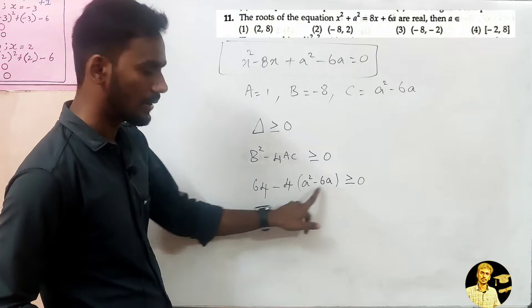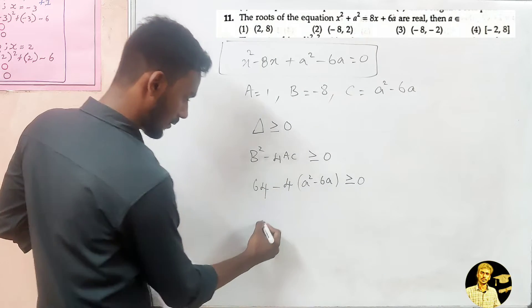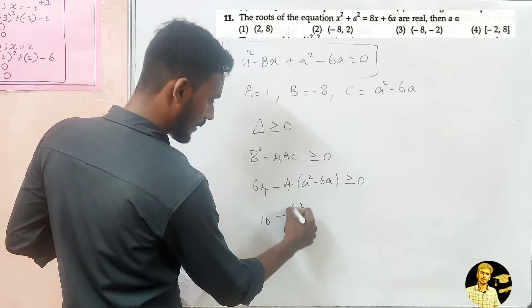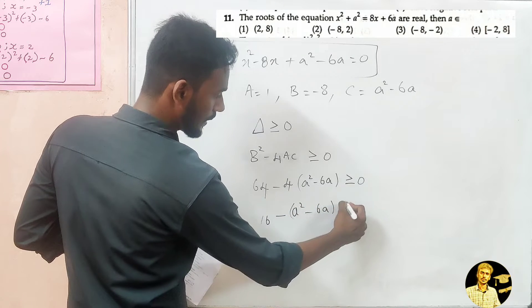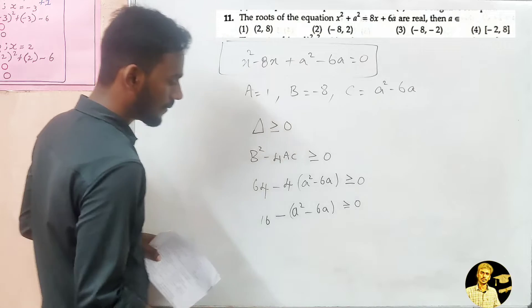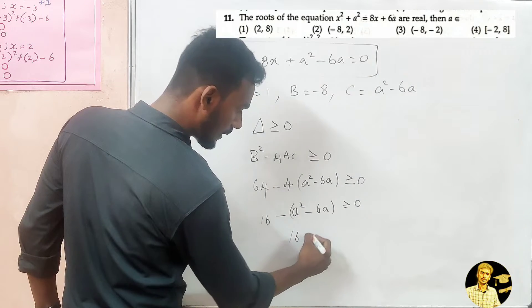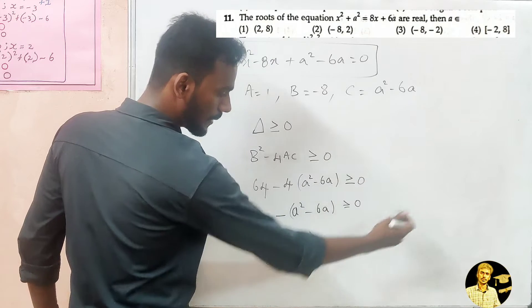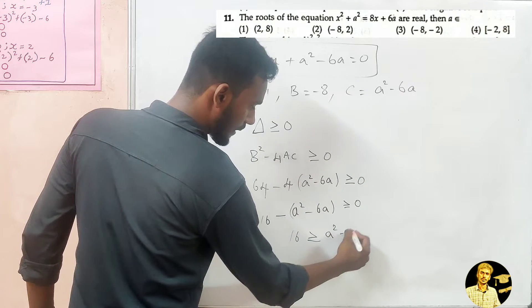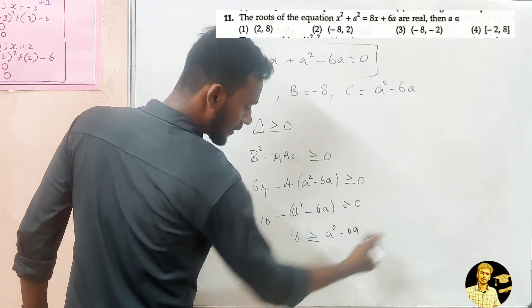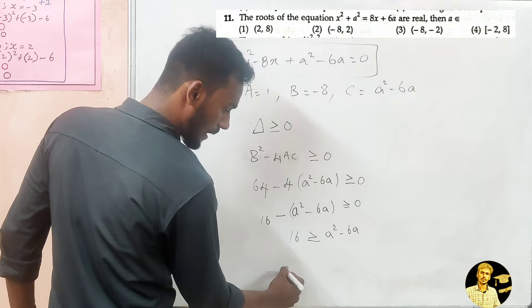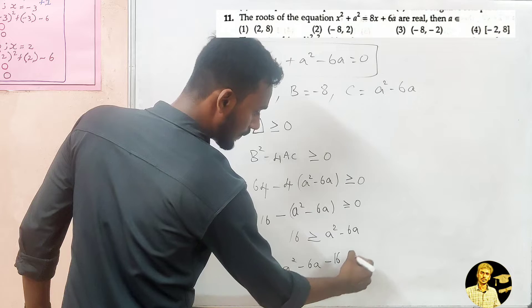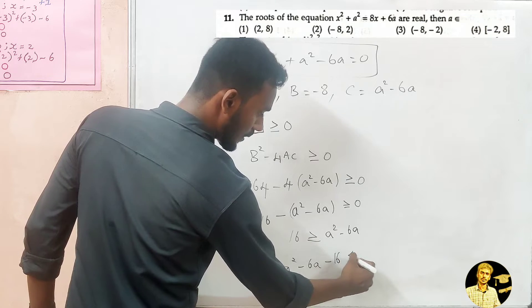Dividing through by 4, we get 16 minus (a² - 6a) ≥ 0. Simplifying further, this gives us a² - 6a ≤ 16, or equivalently a² - 6a - 16 ≥ 0.